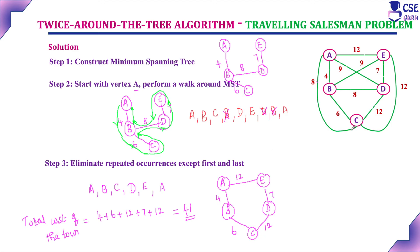This is the travelling salesman problem solved using the twice around the tree algorithm — twice you have visited all the vertices around the tree. Compared to branch and bound or dynamic programming, which are very tedious to implement, this is a very simple procedure and we got the solution. This is the approximation algorithm to solve the travelling salesman problem. Under approximation algorithms, we discussed two: the nearest neighbor algorithm and the twice around the tree algorithm.